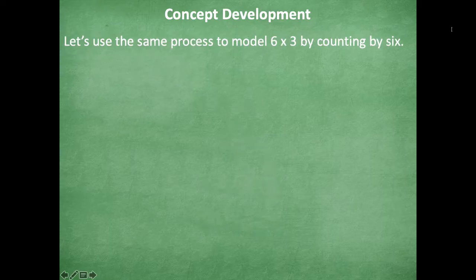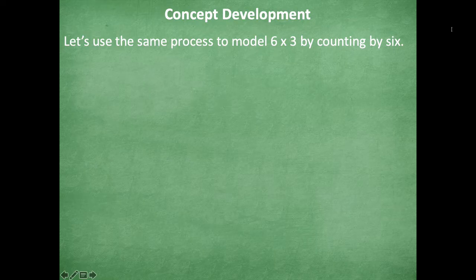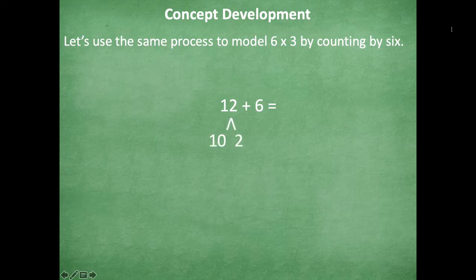So that's how you can decompose that. Let's look at another one. So we're going to use the same process to model six times three by counting by six. So we have 12 + 6 because we just did six times two. So now we're going to do six times three, which is twelve. I'm going to break this apart into a ten and a two because I can't make a ten with either one of these numbers.